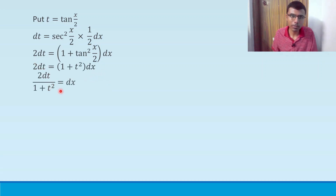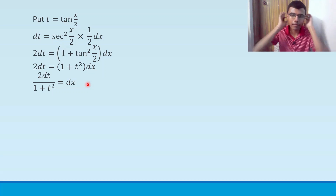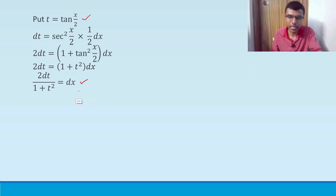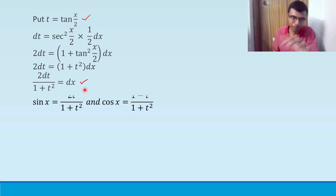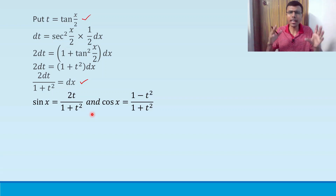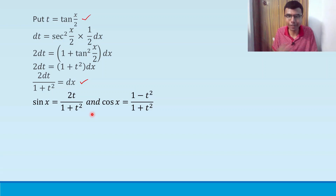Therefore dx = 2 dt / (1 + t²). In the exam, you can write the first step and then directly write this result — I don't think anyone would deduct marks for that. Also memorize: sinx = 2t/(1 + t²) and cosx = (1 - t²)/(1 + t²). We'll leave the derivation of those and continue, as the video is already a bit lengthy.